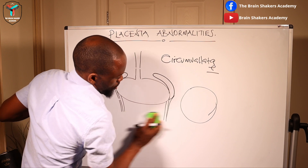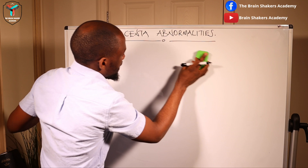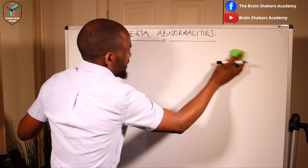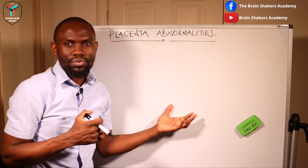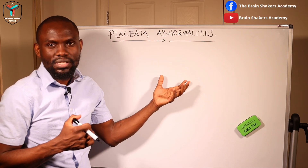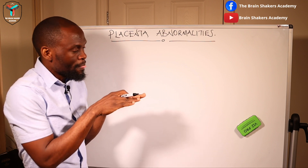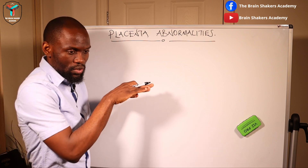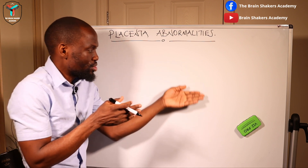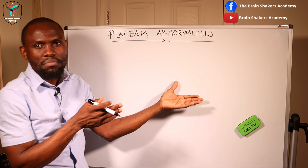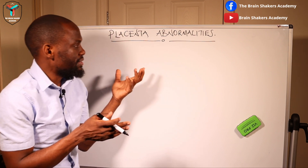Those are some of the commonest abnormalities noticed when examining the placenta. When examining the placenta you must also make sure the lobes on the maternal surface are complete, and ensure the sulci separating the cotyledons do not reveal any missing cotyledon, as that could indicate a retained placenta within the uterus after delivery.